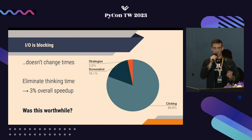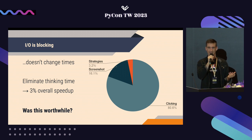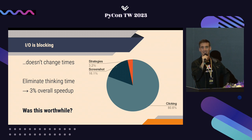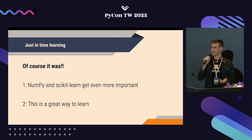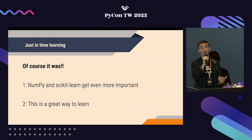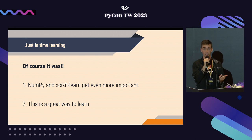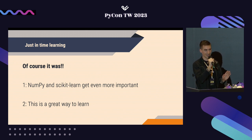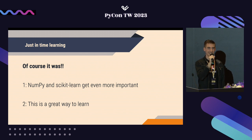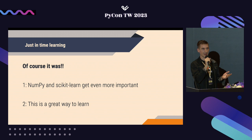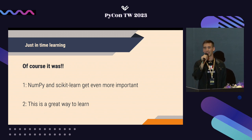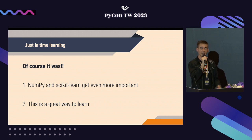Was all of this optimization worth it? In some sense, yes — it turns out like most processes, this is heavily blocked by IO. Even if we could magically eliminate the time it spends thinking about strategies, 97% of the time is still taken up with screenshots and clicking. But was it worthwhile? Of course. Later strategies took very sophisticated use of NumPy and did some either very smart or very dumb things with numerical convolution. It's also a good way to learn a library that will show up elsewhere. The experts call this just-in-time learning — an incredibly powerful way to internalize not just what something can do, but why it works and how you can use it elsewhere.